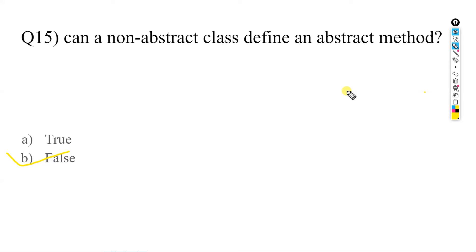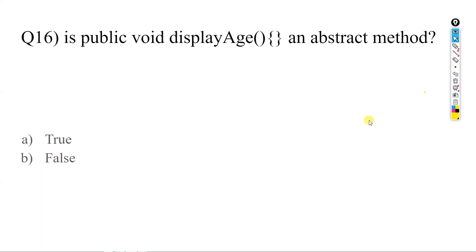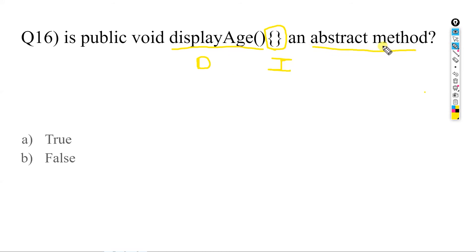Is 'public void displayAge() {}' an abstract method? When we write a method name with opening and closing curly braces, that is a definition plus initialization — the method has a body. A method with a body is not abstract. Only if we remove the curly braces and have just the method signature is it considered abstract. So the answer is false.